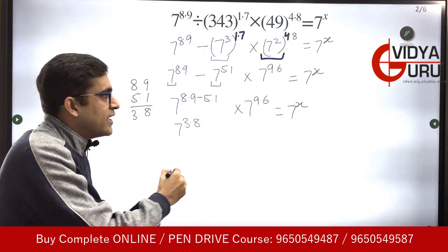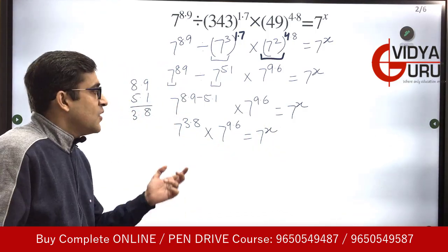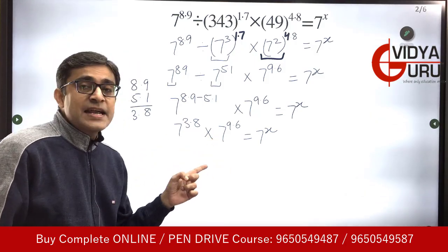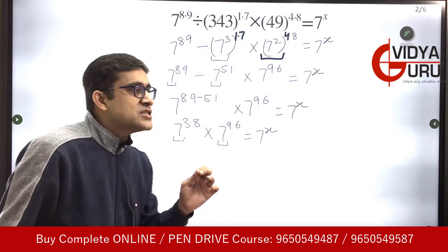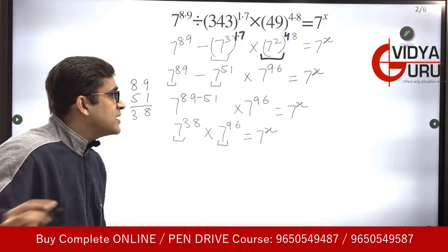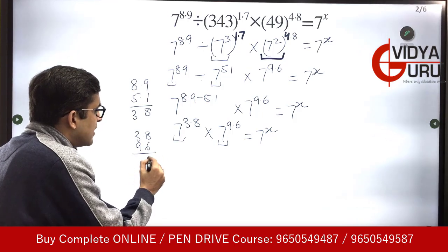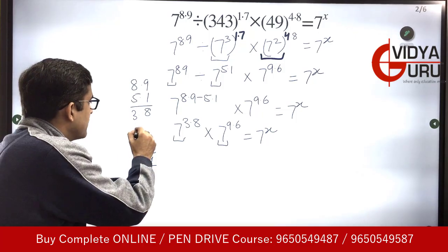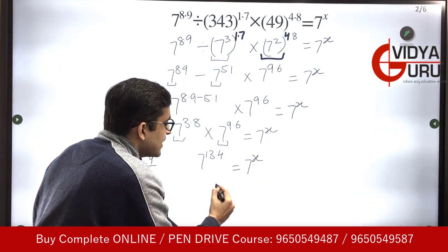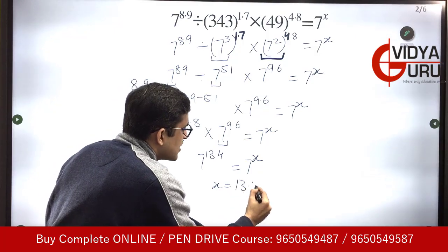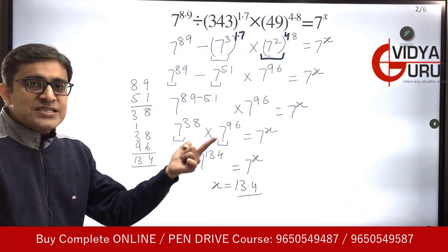So 7 raised to power 3.8 multiplied by 7 raised to power 9.6 is equal to 7 raised to power x. Now the bases are the same and the terms are getting multiplied, so the powers will get added. 3.8 and 9.6 get added to give 13.4. So 7 raised to power 13.4 equals 7 raised to power x, and x turns out to be 13.4. Let's move on to the next question.